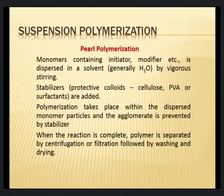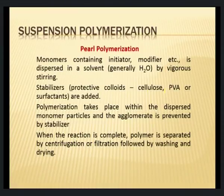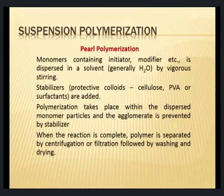Suspension polymerization can also be called pearl polymerization because the formed products are pearl-shaped. The monomers containing initiators, modifiers, etc., are dispersed in a suitable solvent — most commonly water — with vigorous stirring. A stabilizer, which is a protective colloid such as cellulose, polyvinyl alcohol, or a surfactant, is added. Polymerization takes place within the dispersed monomer particles, with agglomeration prevented by the stabilizer.